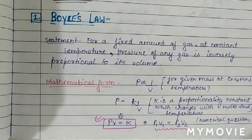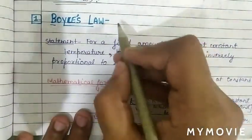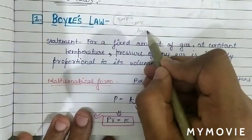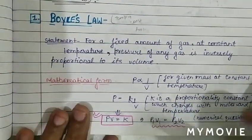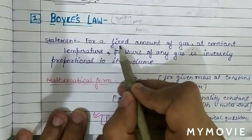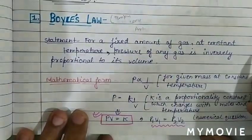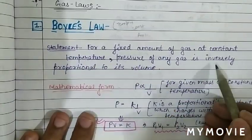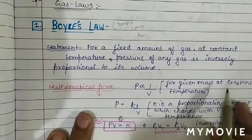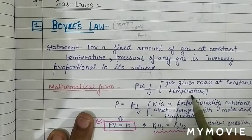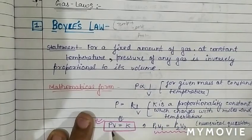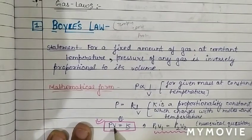The first gas law is Boyle's Law, in which temperature and amount of gas are constant. The statement: for a fixed amount of gas at constant temperature, the pressure of a gas is inversely proportional to its volume. Mathematically, P ∝ 1/V, so PV = constant (k). This gives P₁V₁ = P₂V₂ = P₃V₃ = PₙVₙ.